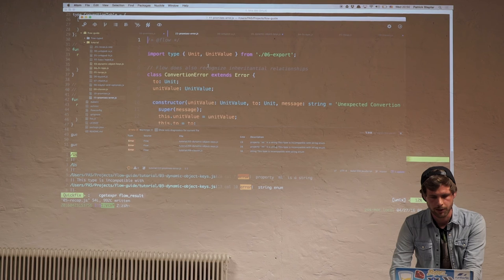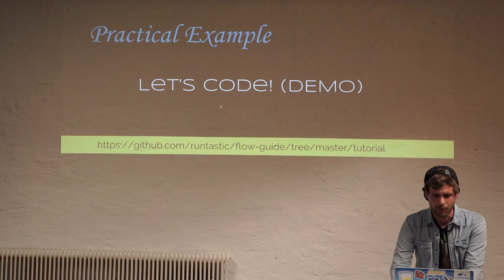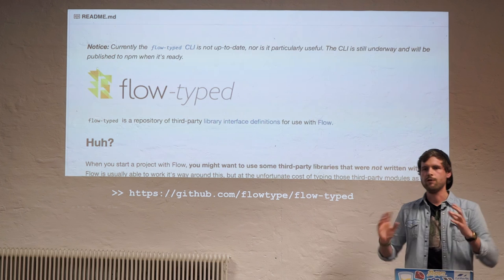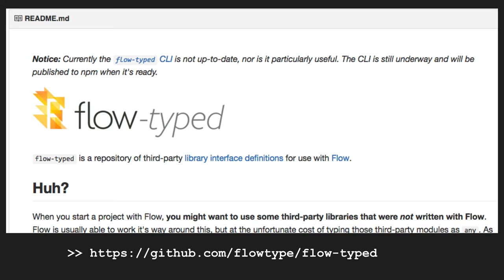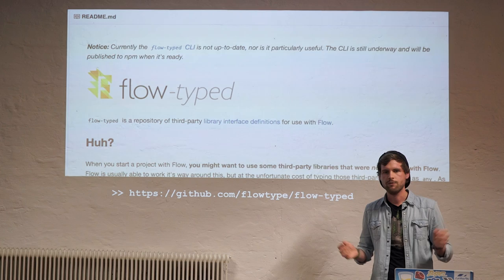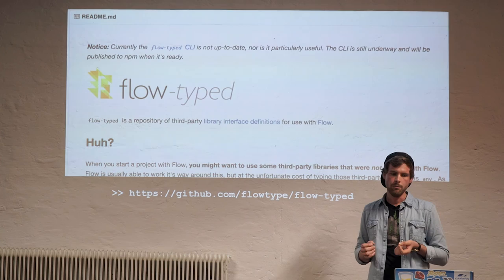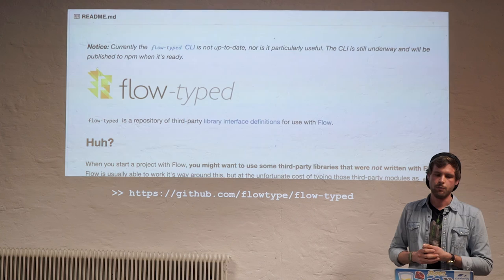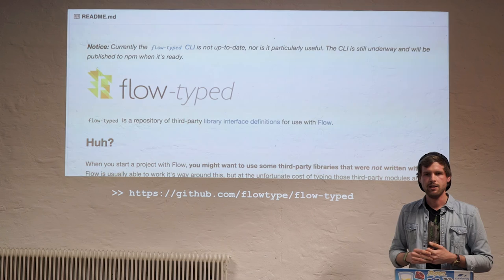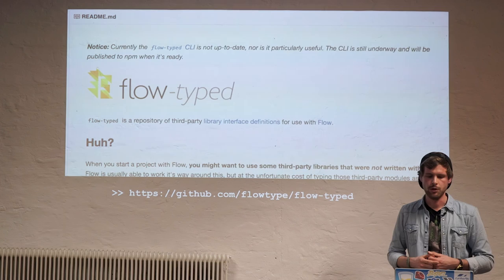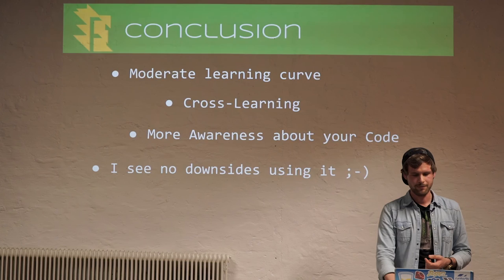The tutorial is available on our GitHub repo called 'flow-guide'. One last thing: the biggest problem with Flow is the availability of third-party declaration files. Unlike TypeScript's DefinitelyTyped, Flow's ecosystem is smaller — but it's easy to write them yourself. There is also a project similar to DefinitelyTyped for Flow called 'flow-typed', where you can find and contribute Flow definitions for popular libraries.